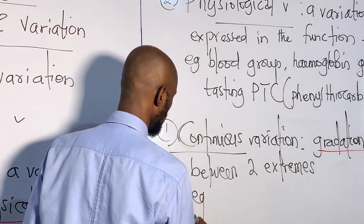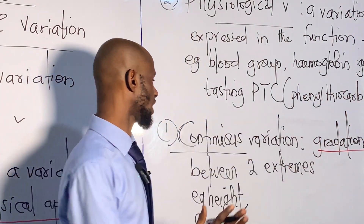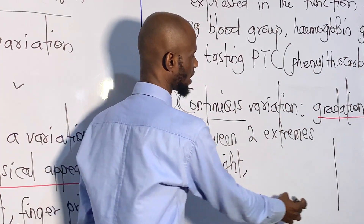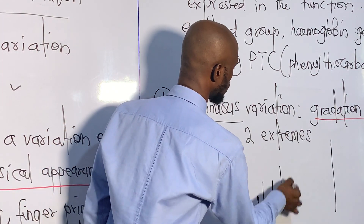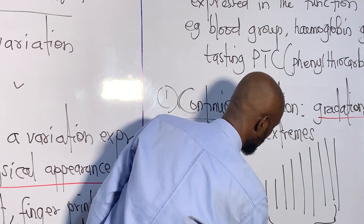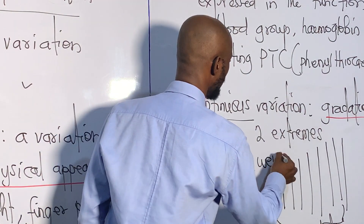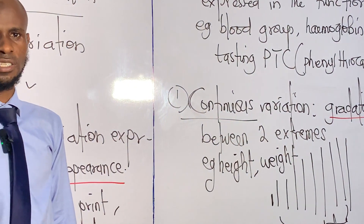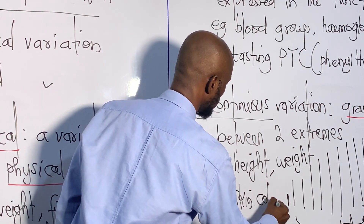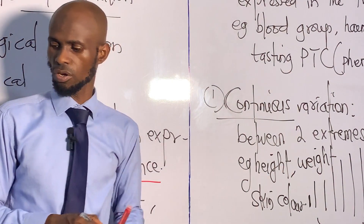For example, height can occur at different ranges — you can have the shortest at one end and the tallest at the other, and in between there are many possible heights. That gradation or transition is what we mean by continuous variation. Another example is weight — you can have a range of different weights. Another one is skin color — you can have different ranges of skin color.